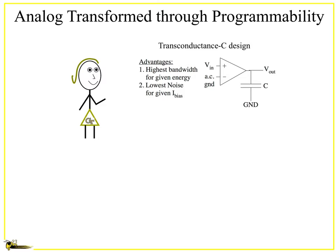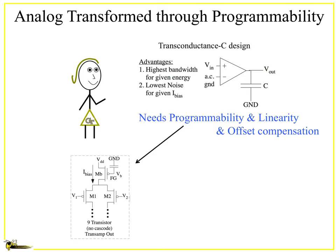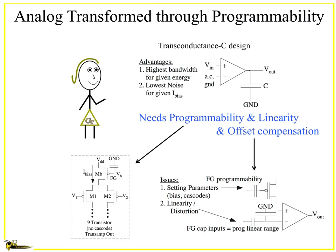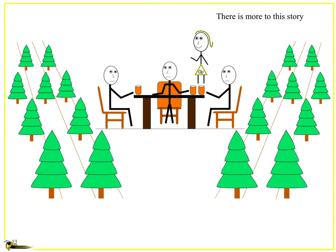And the other part is analog gets transformed through this programmability, because if I have like a transconductance capacitor design, which we know gives us the lowest noise we're given bias current and the highest bandwidth, and all the really efficient things we want. Now, this is a great technology, except that it really needs programmability and linearity and offset compensation to go anywhere. Well, what's cool is that that current source can actually set the differential pair. We're in great shape. It also then allows me to set the offsets. It also allows me to then do things to set the linear range. So we're in a really good spot here with a technology that really can open it up.